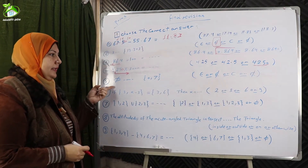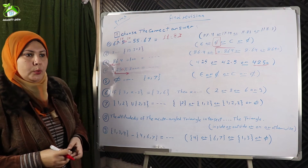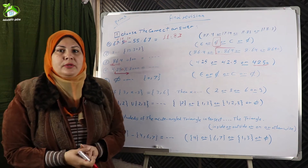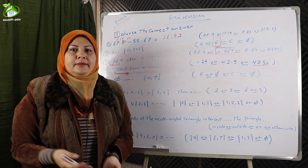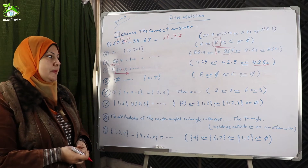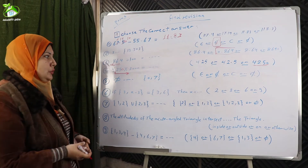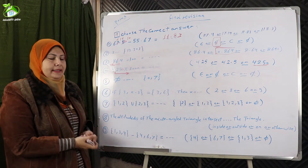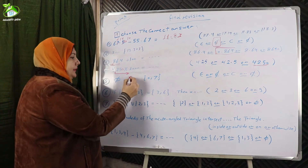Number five: the empty set and another set. We said before that the empty set is a subset of any set. So the relation between the empty set and any set is 'subset'.